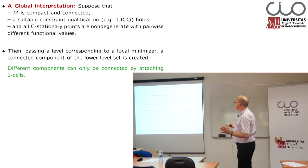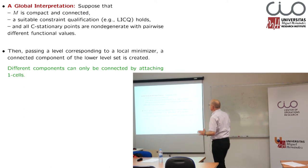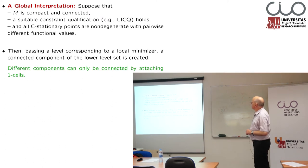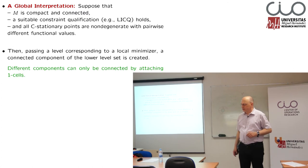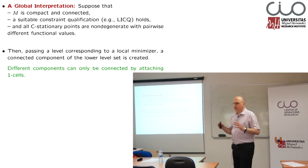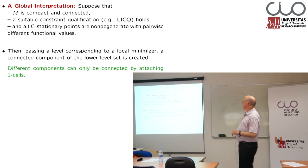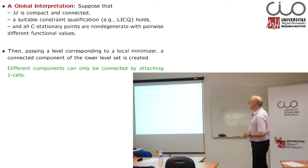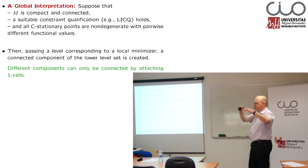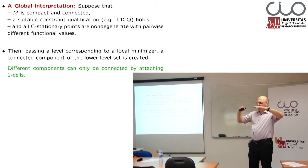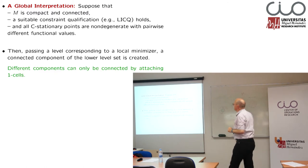Global interpretation: M is compact and connected. We have a suitable constraint qualification — for example, linear independence constraint qualification. And we will assume that all C stationary points are non-degenerate, creating a normal form for our problem. I will define what I mean with non-degenerate and with pairwise different functional values. That's a technical assumption — we can make that by small perturbation, so that we need not describe, for the same level, changes which are related to two different stationary points.